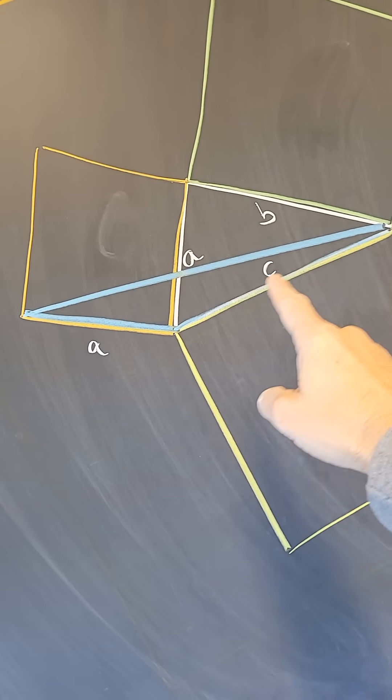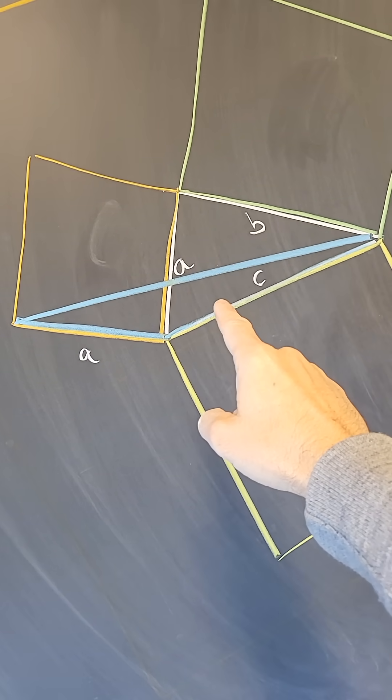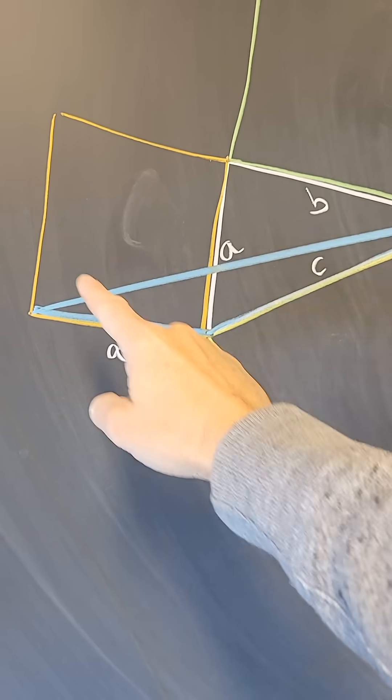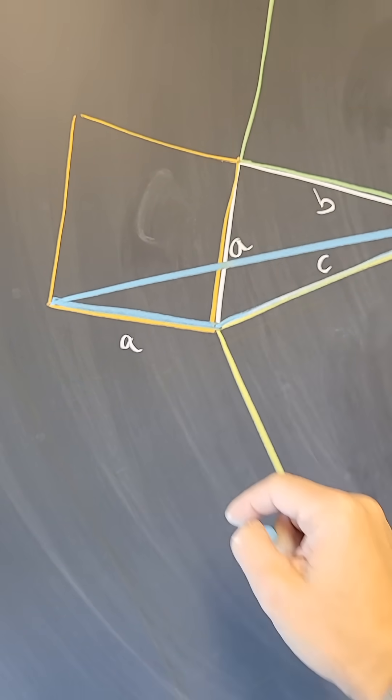So the area of the blue triangle is A squared divided by 2, where A squared is the area of that square.